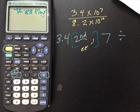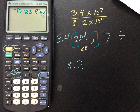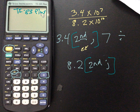Then you're going to hit the divide button, right? Because we're dividing by this. And then you would type in 8.2 again with the second comma. I don't know why I made that into a semicolon, there we go, comma button, and then the exponent of 10.